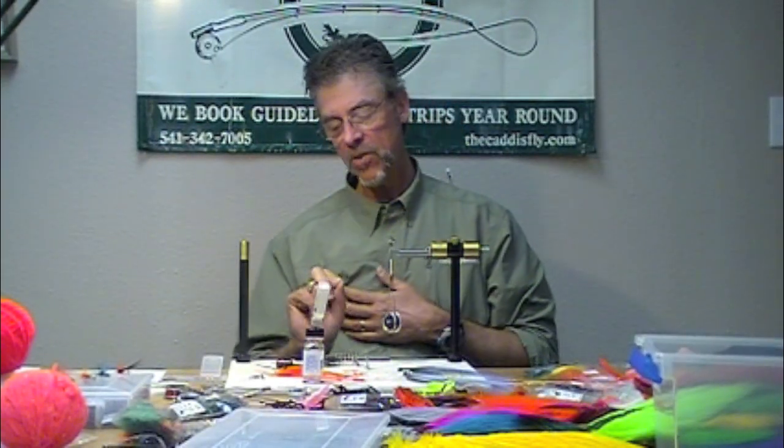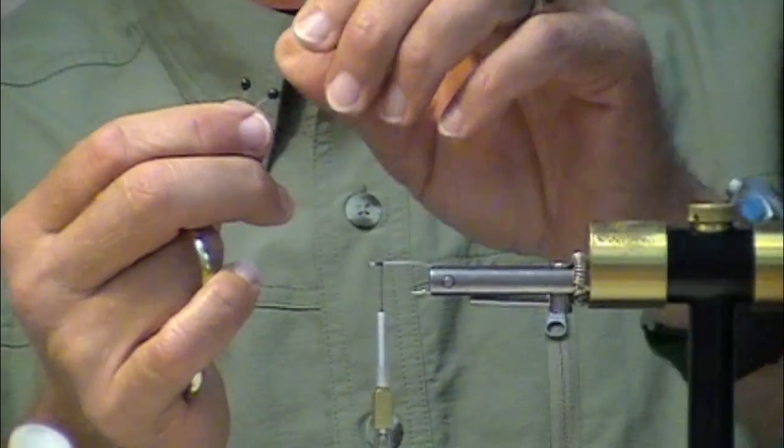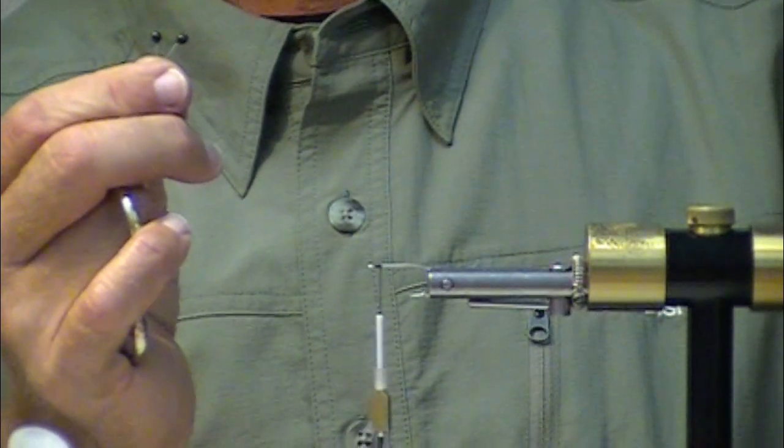Okay, we're going to tie a shrimp fly. See these little babies? Crab and shrimp eyes. They come on a little piece of monofilament. Hold those up again for me, sorry Jay. Very cool. See that? Those are EP, Enrico.